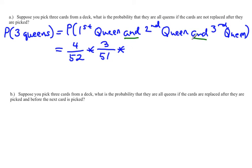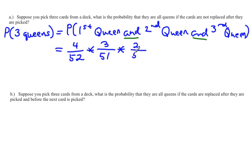Then once I see the word 'and' again, I put a multiplication symbol, and we want the probability that the third is a queen. If the third is a queen and we didn't replace, we have to assume the first two were queens. So for the third to be a queen, there are only two queens left in the deck and only 50 cards remaining. That's your probability — you can multiply those together to get the final answer.